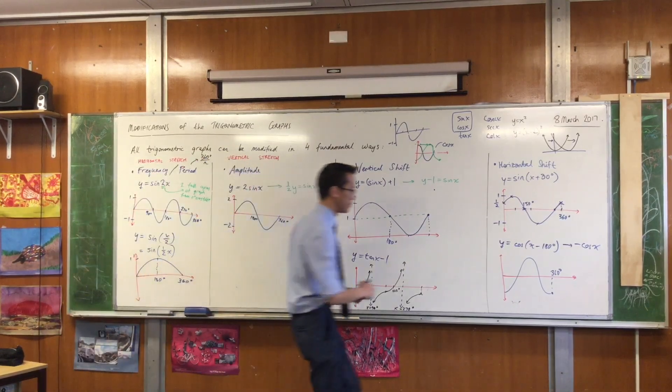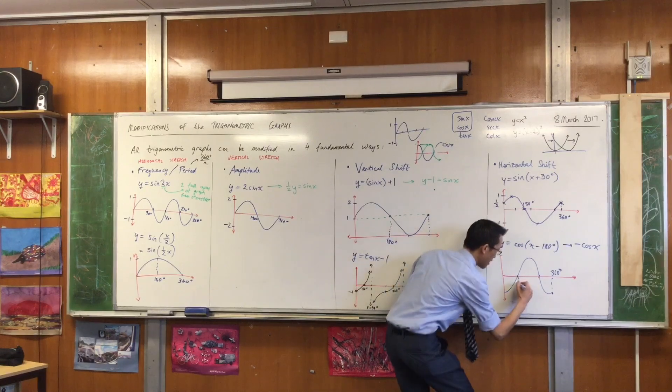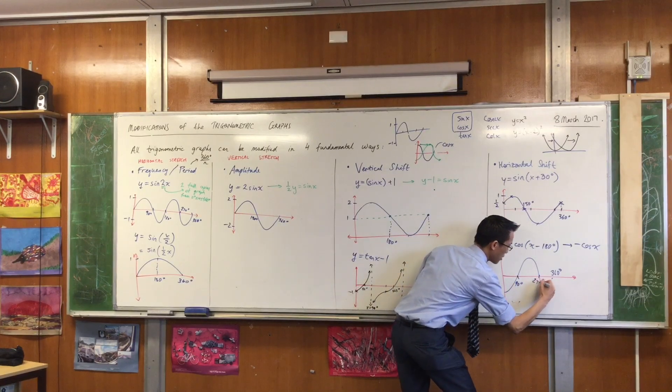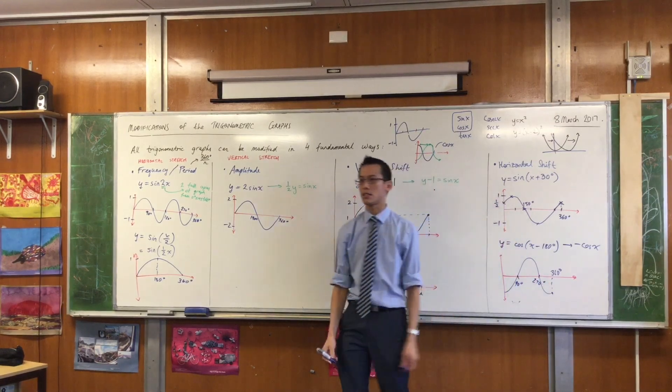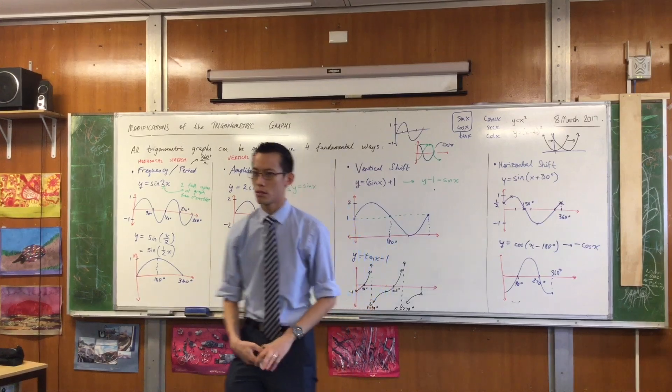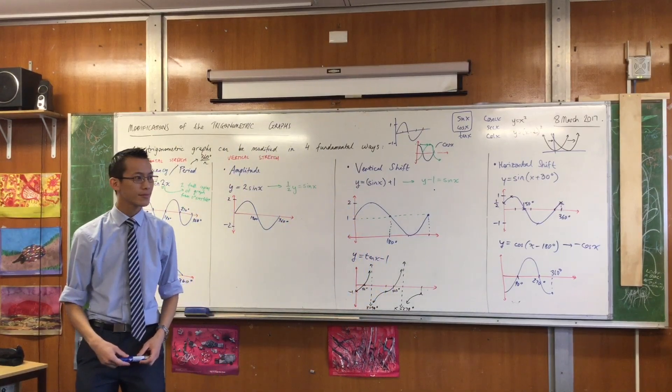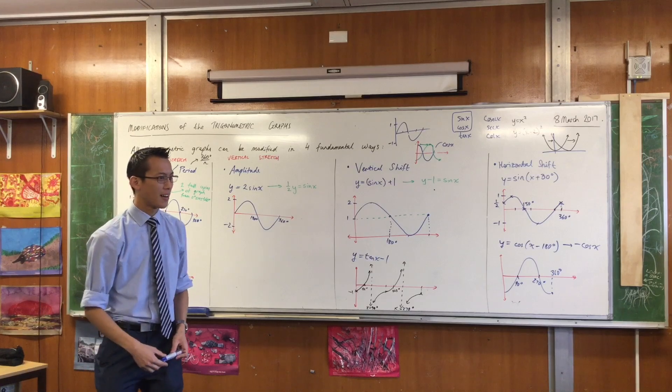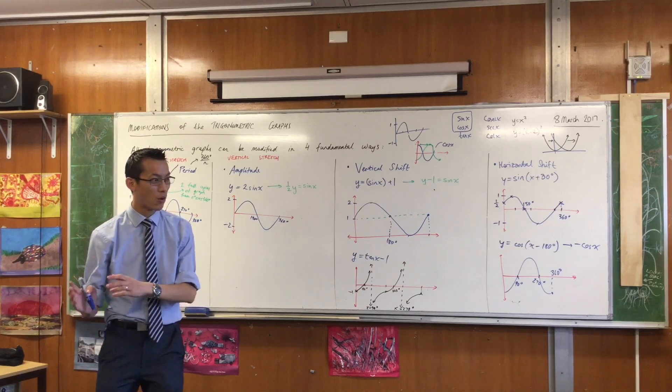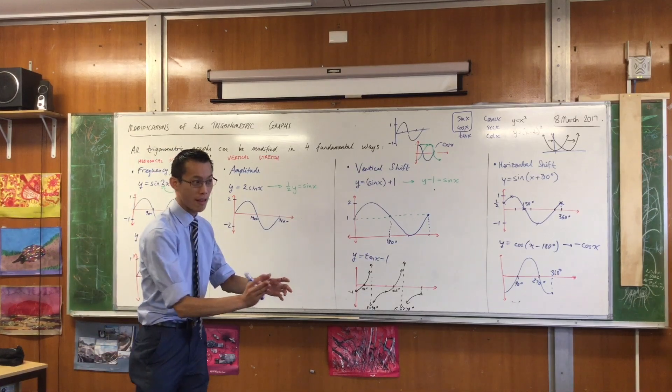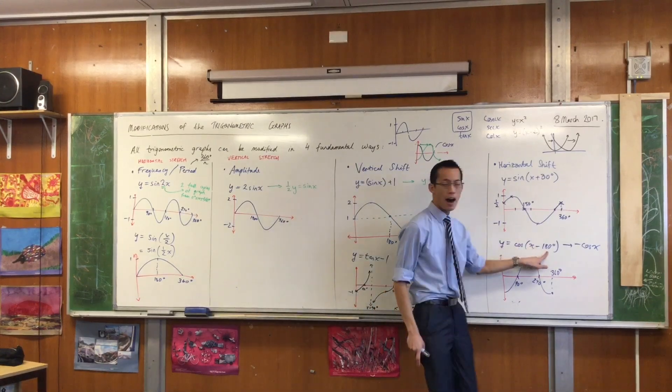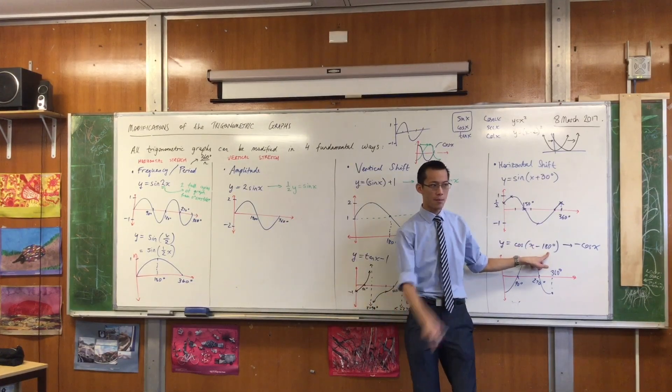But this has been shifted. Interestingly, I still have these intercepts. Why are the intercepts unchanged? Because that's where the intercepts usually are for cos. I haven't actually gone all the way to get a full copy, because the shift is only half of the period.